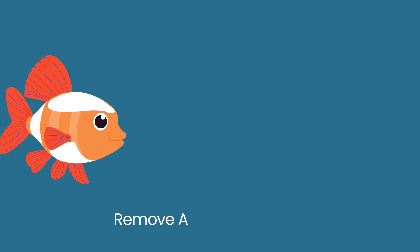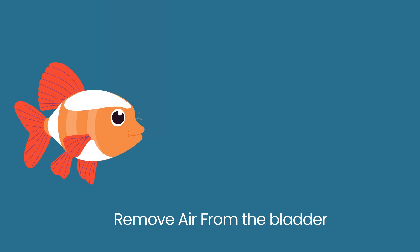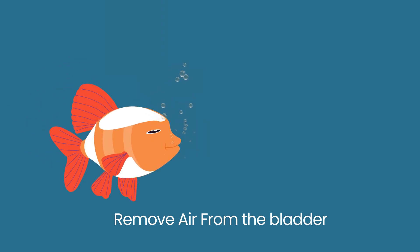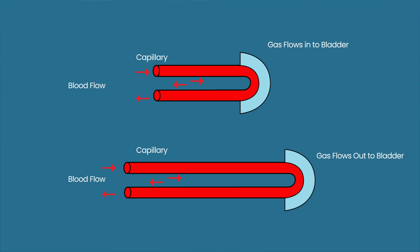So if the fish wants to sink, it removes air from the bladder. Less buoyancy means the fish goes down. The air is added to and taken out of the bladder using tiny blood vessels called capillaries, which can exchange oxygen in and out of the blood, into and out of the bladder.